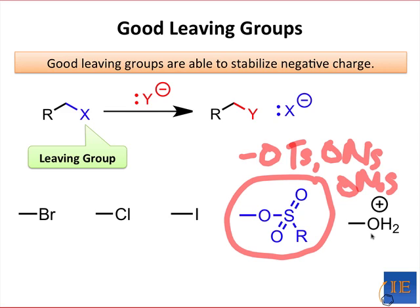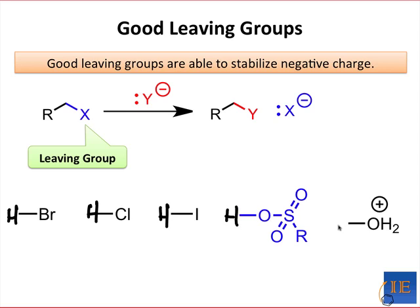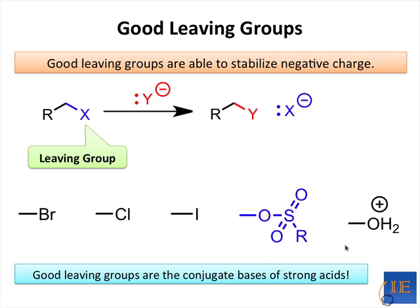Before you start memorizing these structures, consider what they all have in common. Pause the video now and see if you can identify what all of these groups have in common. Now, imagine adding an H to each group. What do you have? A set of five very strong acids. Good leaving groups are the conjugate bases of strong acids. A good rule of thumb is, if the pKa of an acid is less than zero, its conjugate base is a good leaving group.